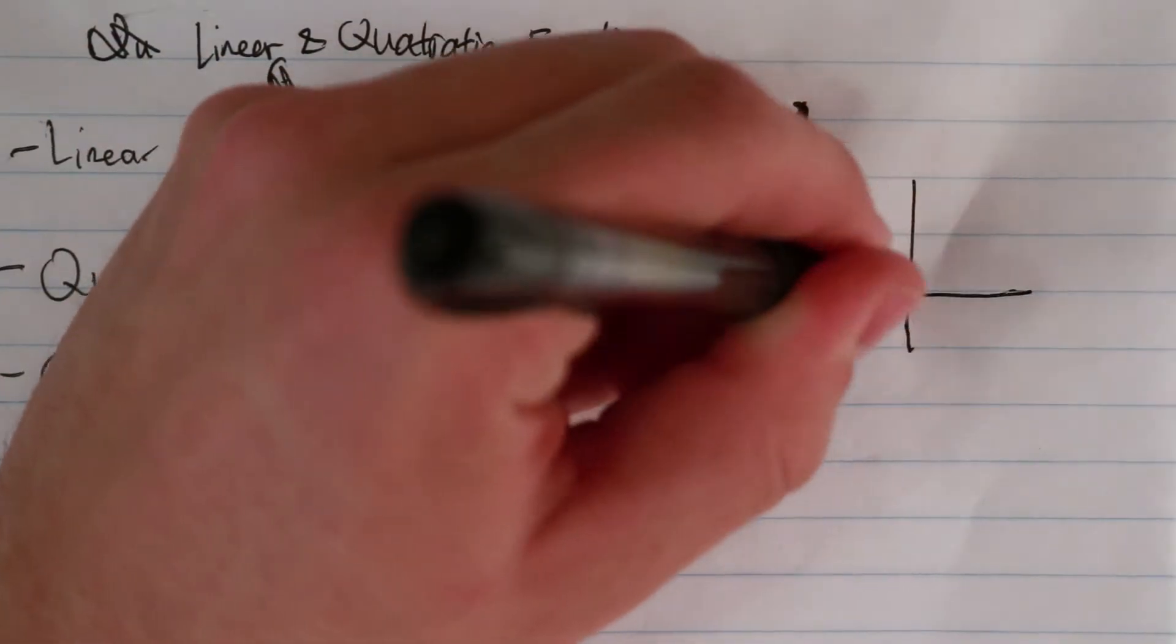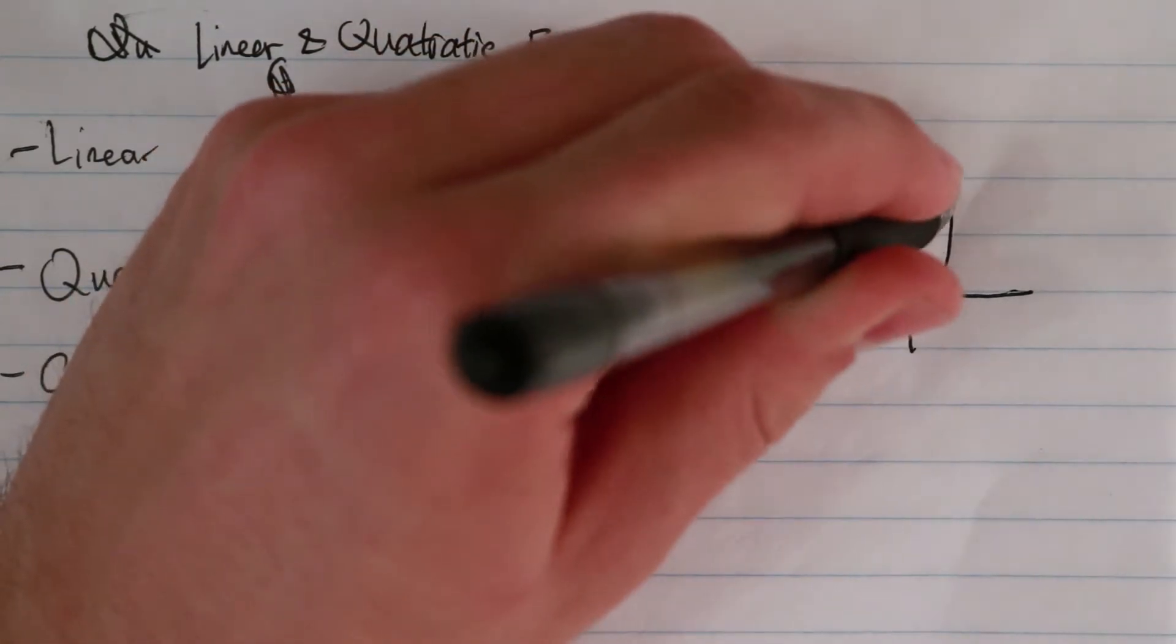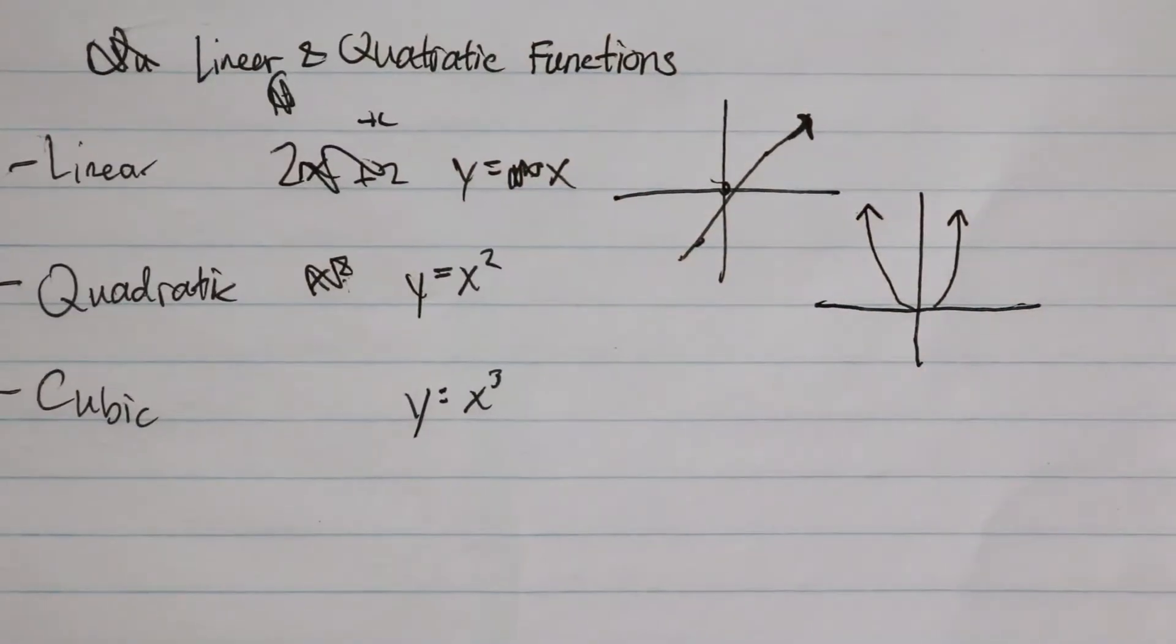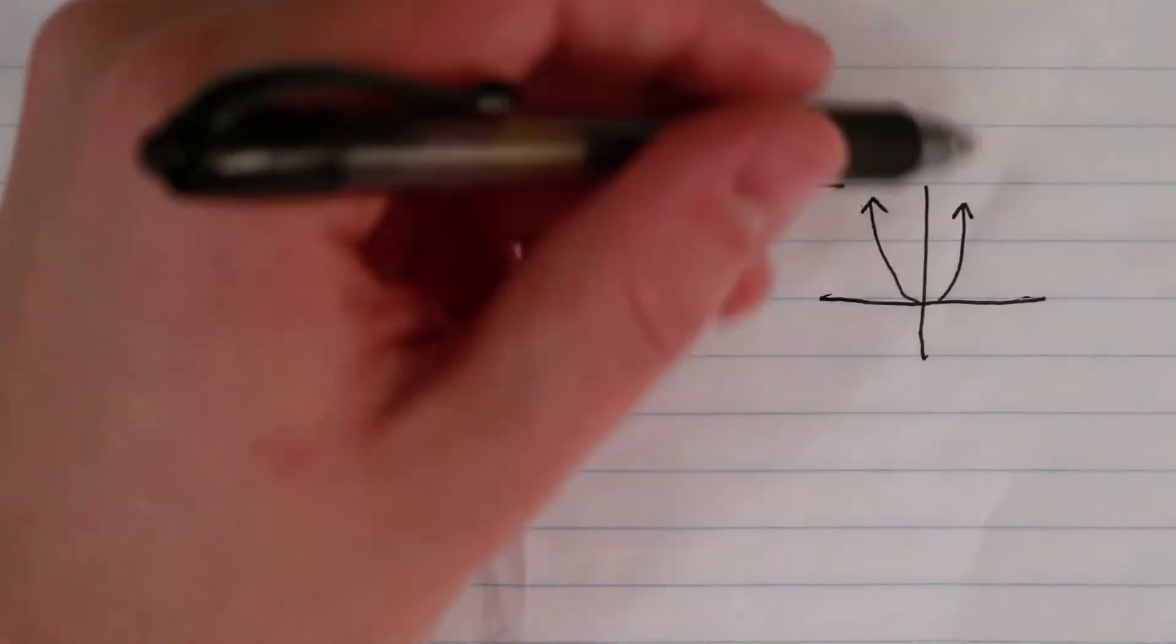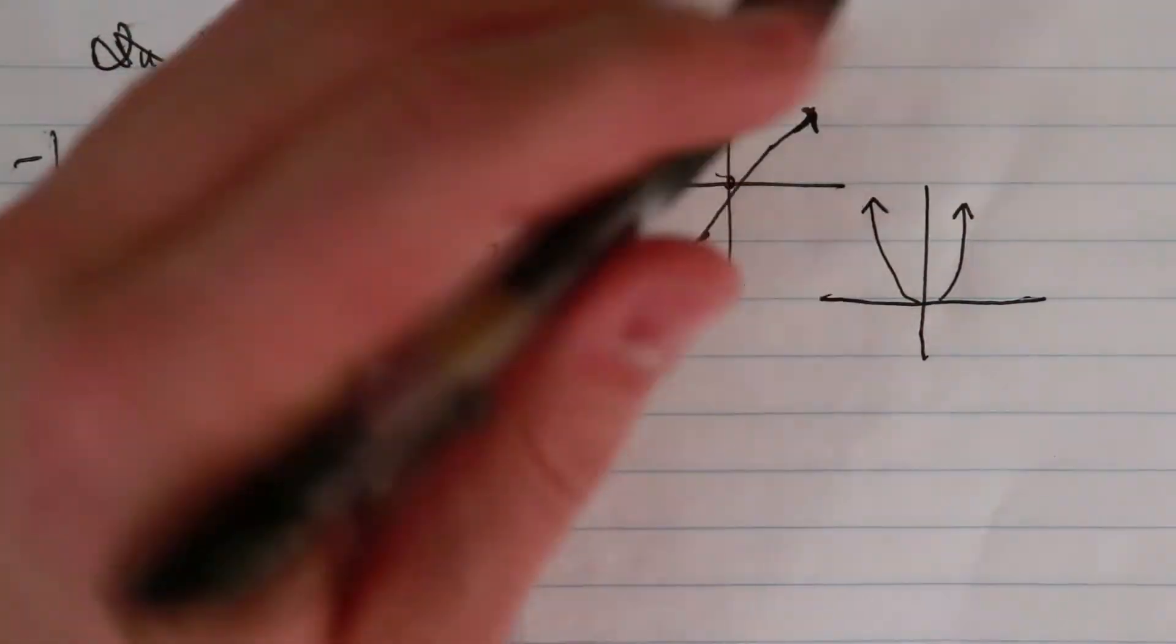For y equals x squared, this is a parabola - the name of this shape, kind of two arcs. It looks like a U.